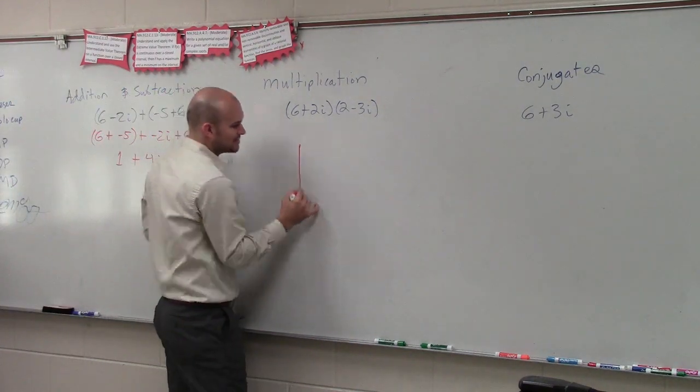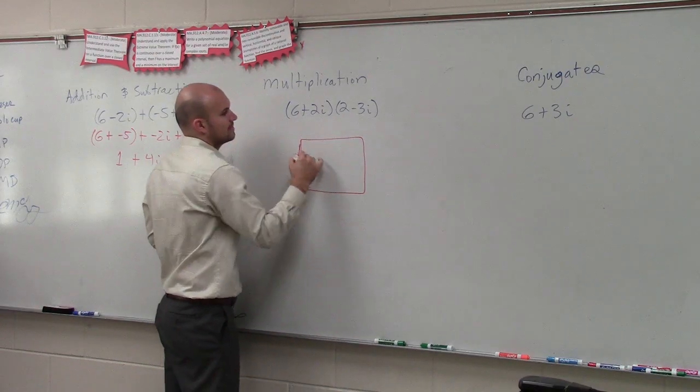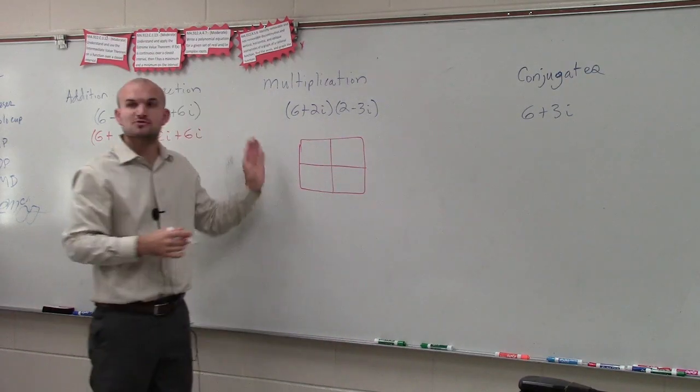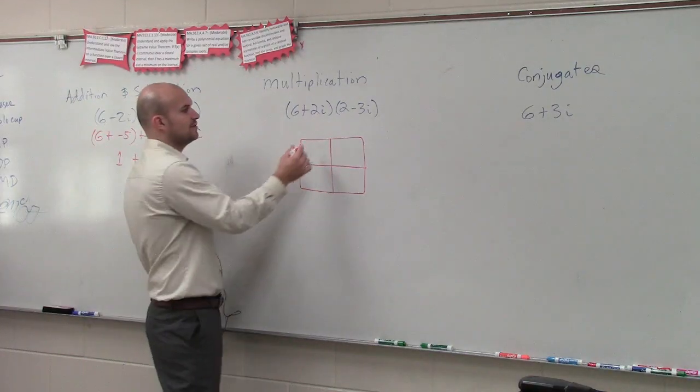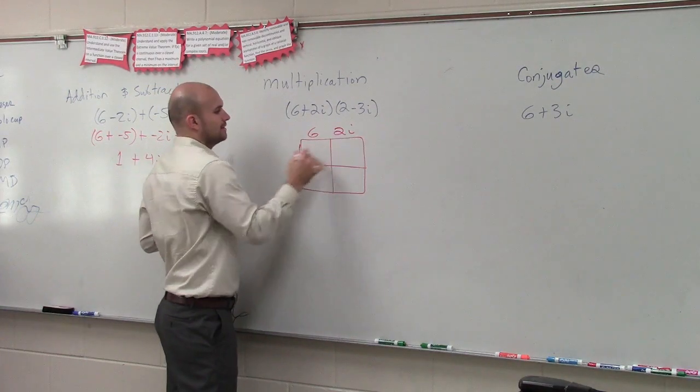Understand? Pretty basic, right? Combine like terms. Add your real numbers and then add your complex. So this is just a watered down version of what we're going to do. Next one is multiplication. You can use foil, you can also use a table if you want to.